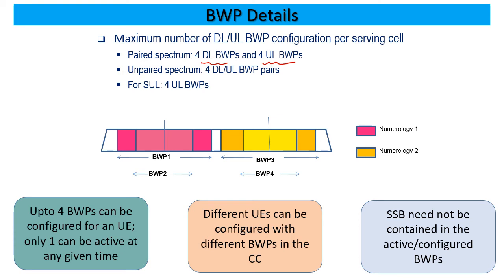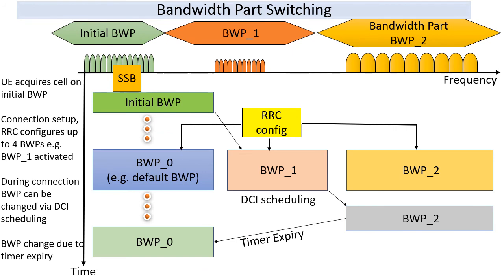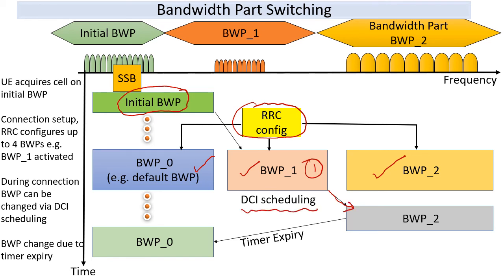A UE will have only one active bandwidth part at a given time, which means that would be where it gets its data, unless it is required to switch to one of the other ones, which is made quite smooth and easy. Once you configure the bandwidth parts, it is quite easy to switch between the different bandwidth parts based on a variety of contexts. This picture gives us an idea of how we start with our very initial bandwidth parts — the areas where we observe the initial signals — where we get RRC connected. Once we get RRC connected, we can have configuration which tells us about various other bandwidth parts we might have to be ready for. We can quickly move to another bandwidth part via DCI scheduling, which can make it very fast.